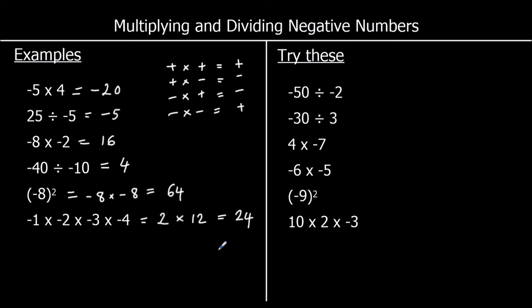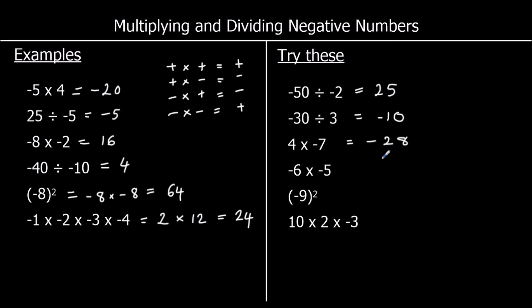Six for you to try, so pause the video and give them a go. The first one: negative divided by a negative, which is positive, and 50 divided by 2 is 25. The second one: a negative divided by a positive, so a negative answer, and 30 divided by 3 is 10 — so negative 10. The third one: a positive times a negative, so negative, and 4 sevens is 28 — so negative 28. The fourth one: a negative times a negative, so a positive answer, and 6 times 5 is 30.